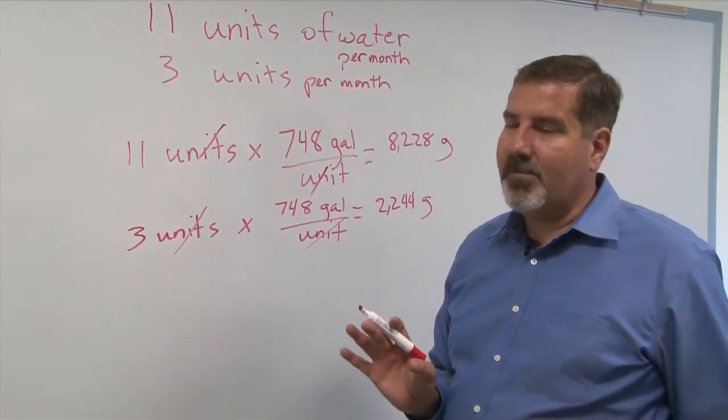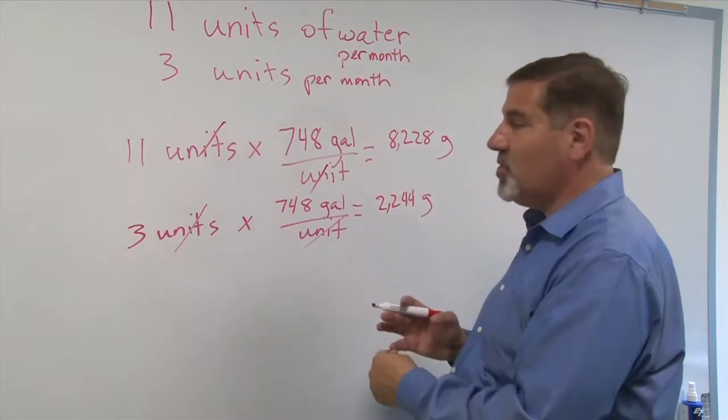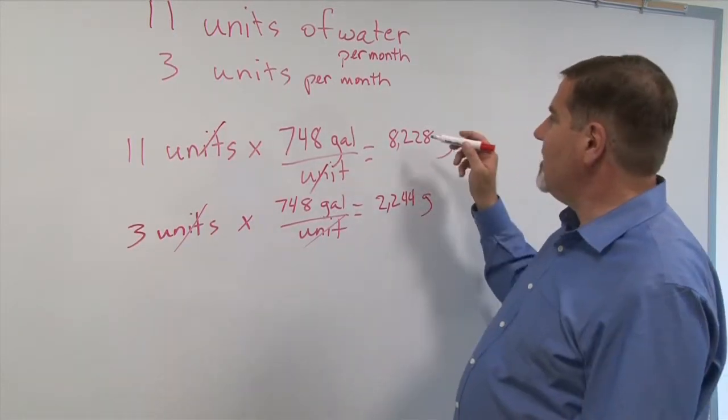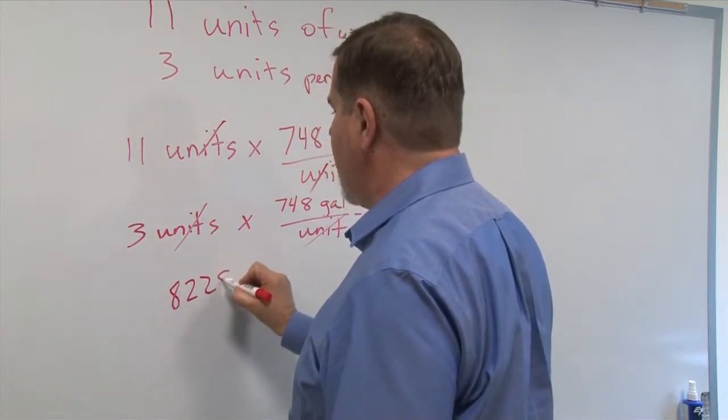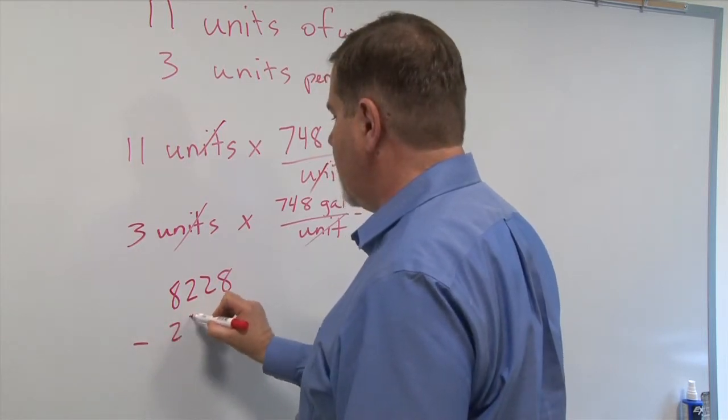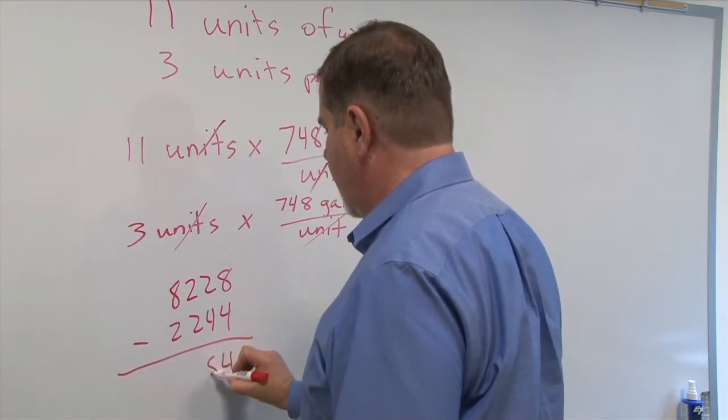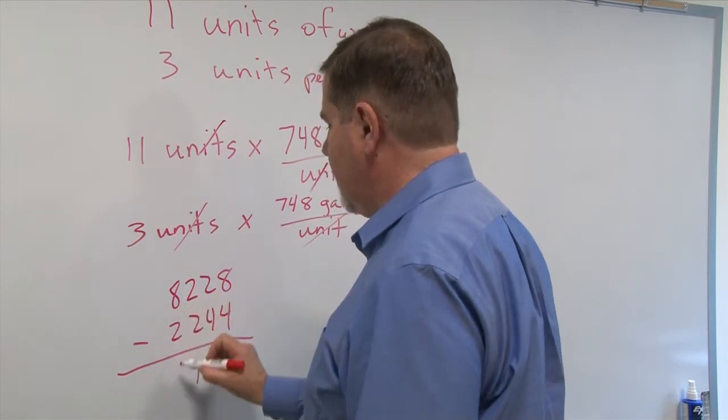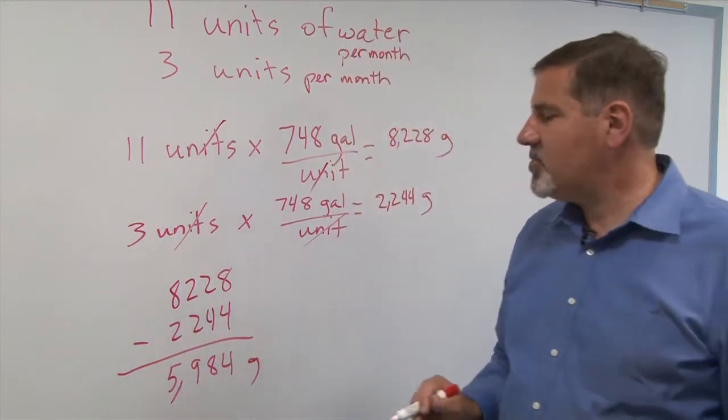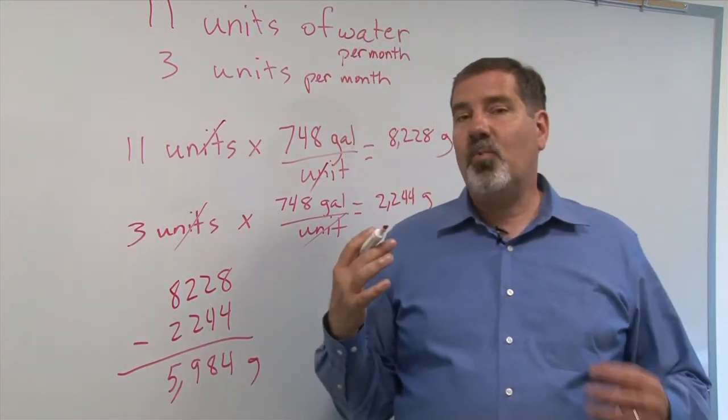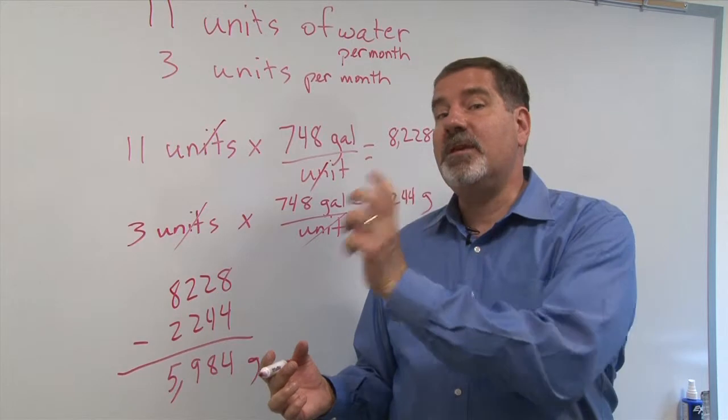Now it goes from somewhat complicated to really simple. The next thing we're going to do is find out the difference, so we'll simply say 8,228 minus 2,244, and that gives us 5,984 gallons. That's how much water my wife and I saved comparing last June to this June that just passed.